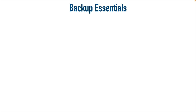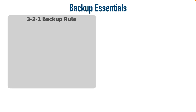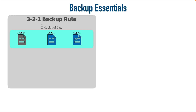Before diving into specific backup types, let's establish some fundamentals. The gold standard of the industry is the 3-2-1 backup rule. The 3 in 3-2-1 means that we should have three copies of our data. So if I have a file that I want to make sure is backed up, I'm going to have the original file — that might be on my laptop's solid-state drive or on a file server — and in addition to that original file, I want to have two extra copies for a total of three copies.